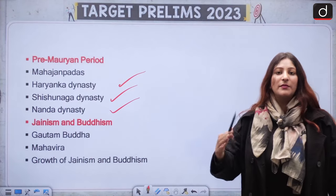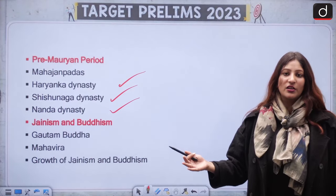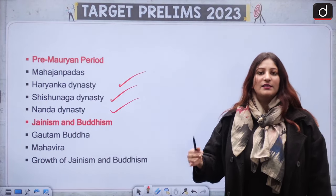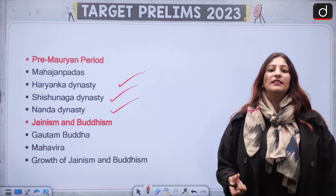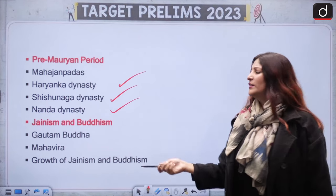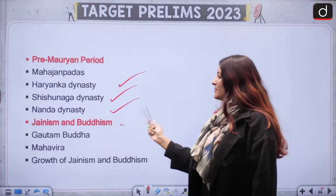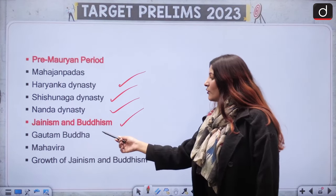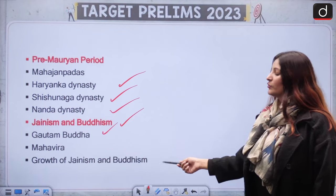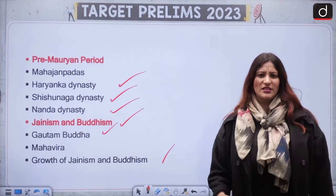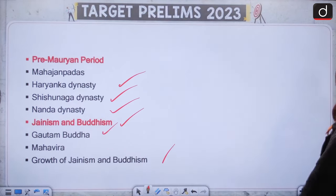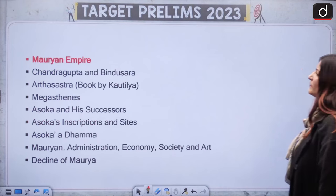What kind of palaces and what materials did they use? Important writers who traveled. Jainism and Buddhism — Gautam Buddha, Mahavir, growth of Jainism and Buddhism, their decline, and literature — everything is included here.